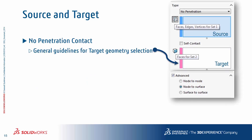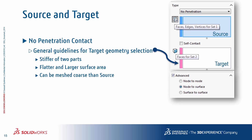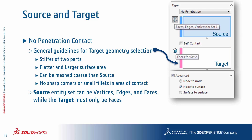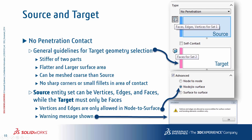For no penetration contact, there are general guidelines for geometry selection. The target geometry should be the stiffer of the two parts, flatter, and have the larger surface area. It can be meshed coarser than the source. No sharp corners or fillets are allowed in the area of contact. The source entity can be vertices, edges, and faces, while the target entity can only be faces for no penetration contact. If you select vertices or edges as source entities, only node-to-surface contact formulation is allowed — switching to surface-to-surface will generate an error message.